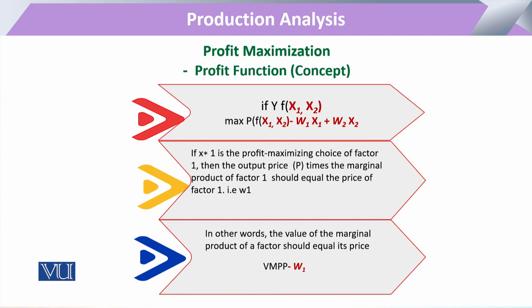In maximizing profit, the output price is the market price. Under perfect competition, our assumption is that any individual firm cannot affect the market price. Similarly, input prices also come from the market and are taken as given. So the market prices will not be affected by the firm's decisions, and the producer's task is to adjust output in response to input demands.